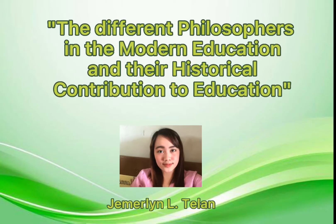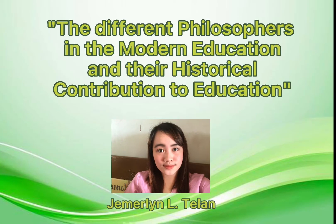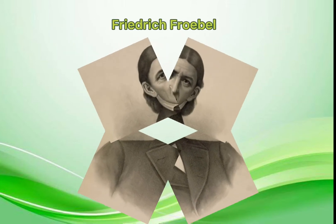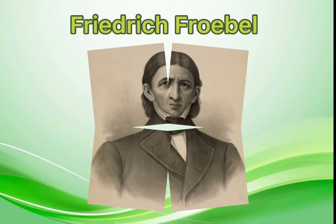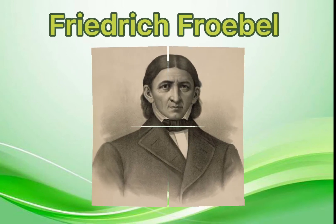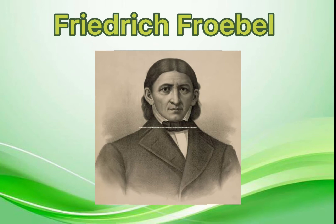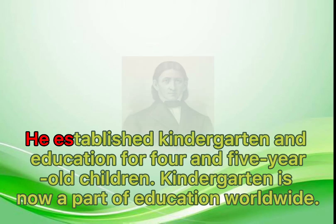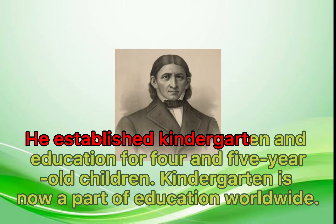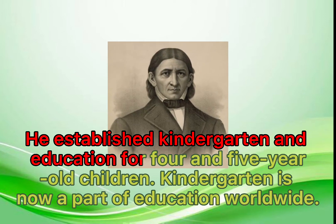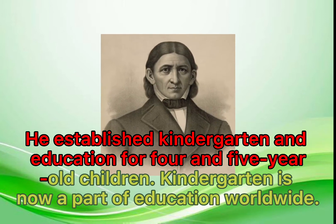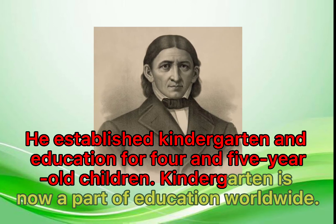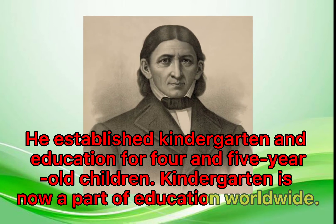Friedrich Froebel was a German educator of the 19th century who developed an idealist philosophy of early childhood education. He established kindergarten and education for four and five-year-old children. Kindergarten is now a part of education worldwide.